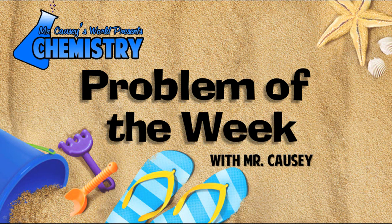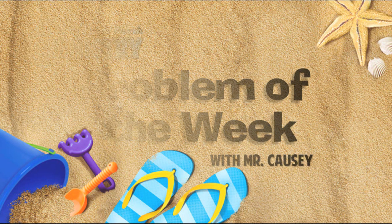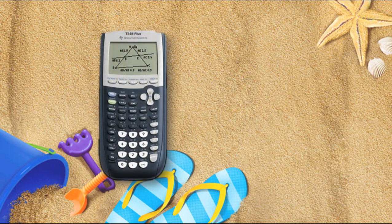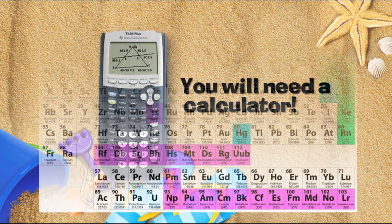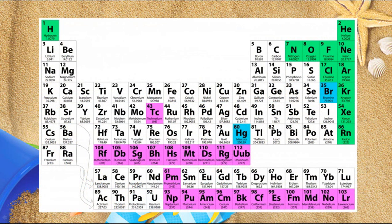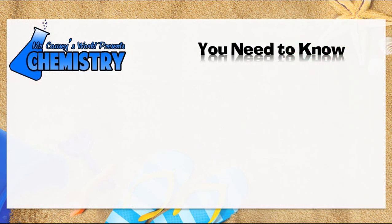This week's problem is going to deal with a mass-to-mass calculation. You're going to need a calculator to do some plugging and chugging, and you're going to need a periodic table. You might even need your polyatomic ion sheet if you have one.